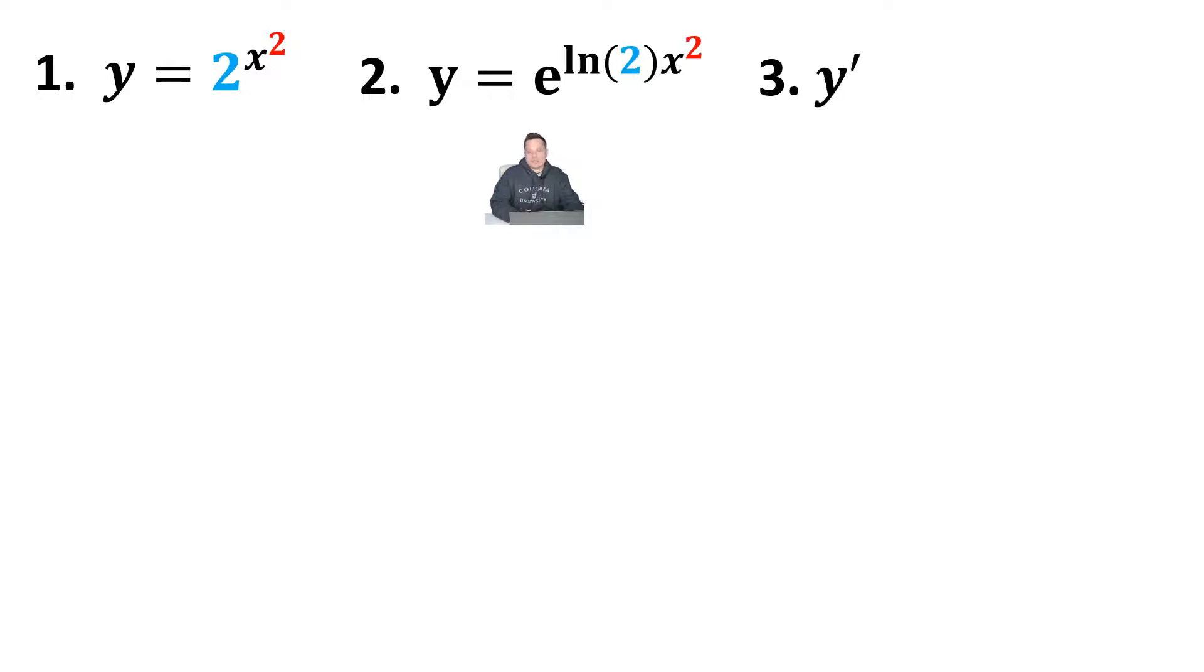So let's take a look at the next step. The next step is going to be y prime will be equal to the derivative of that expression e to the ln. If you look at this expression, e to the ln 2x squared, you can apply the derivative rule and the chain rule for the e function. That's why you want to write it this way.